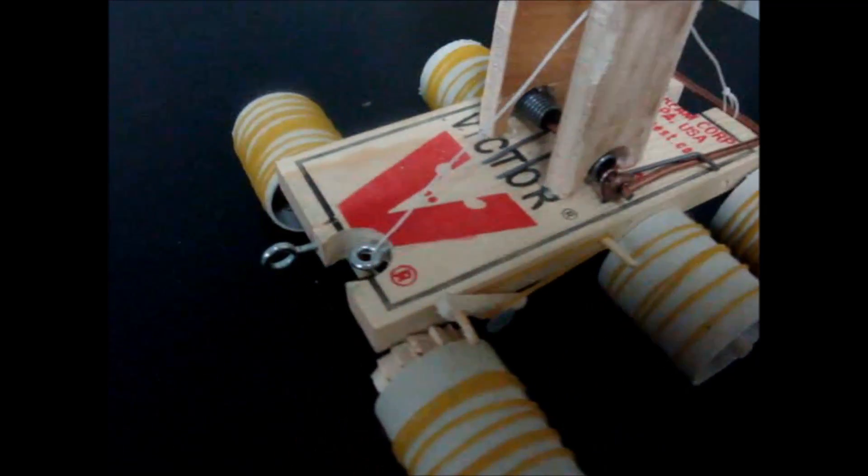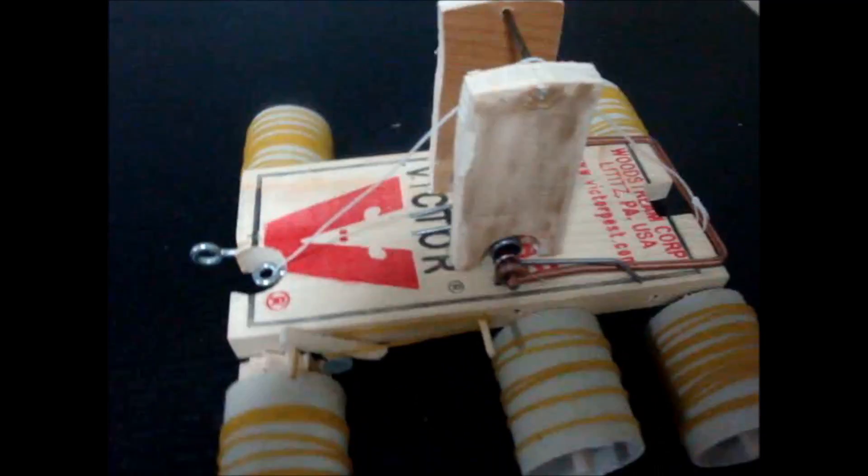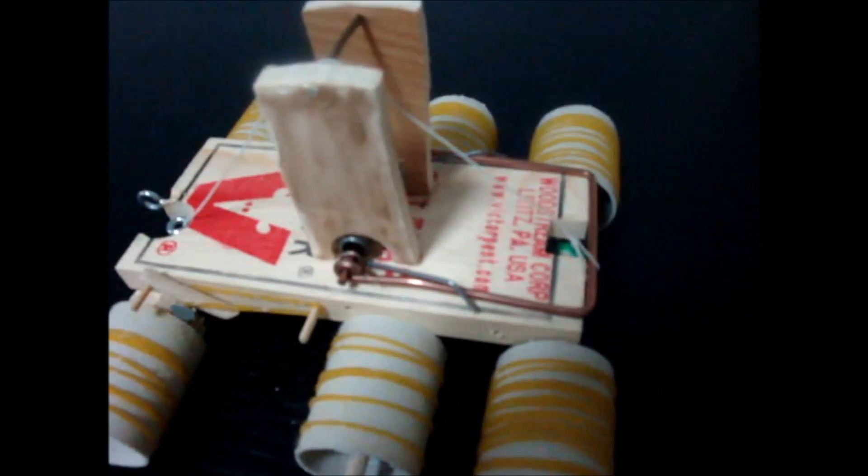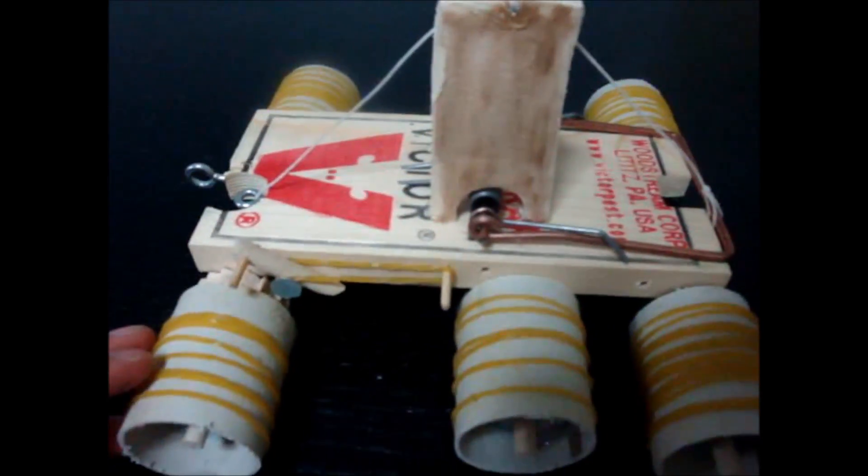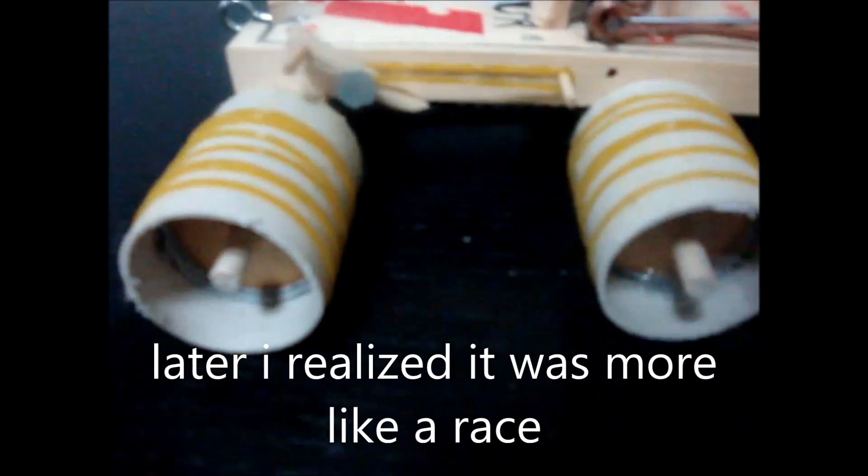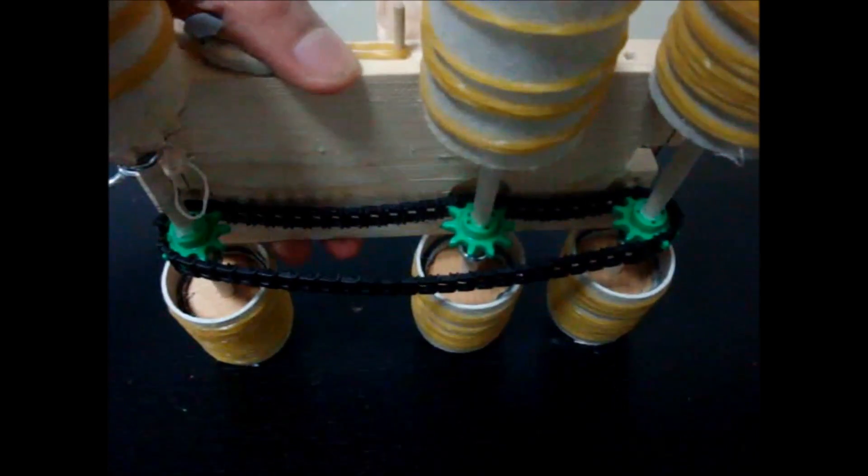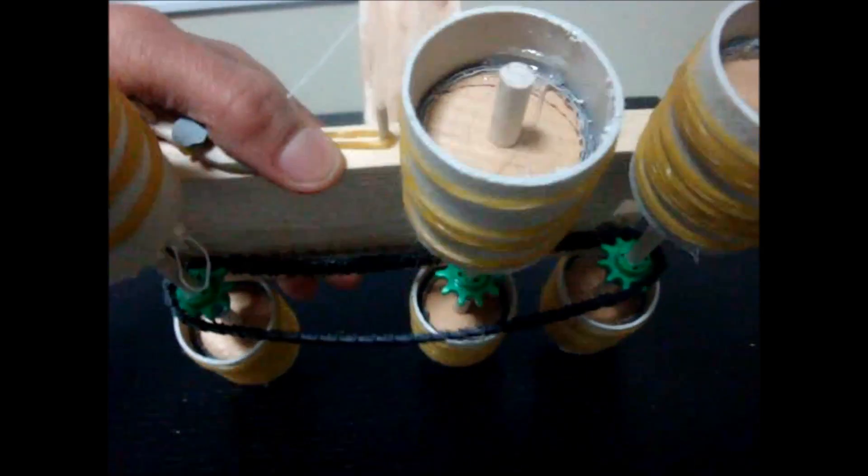So this is a rat trap car I built. The challenge for the project was to build it for torque, because it's going to be in a tug of war. So here I made six wheels. All of them are driving. I have a gear train in the bottom that makes all six wheels drive together.